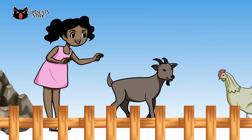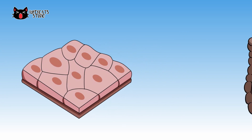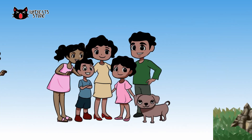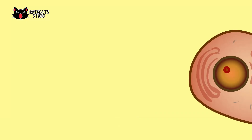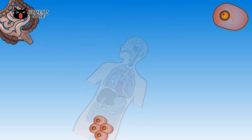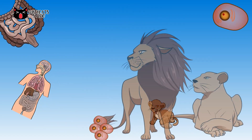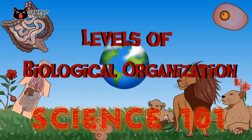Studying living organisms is a broad topic. To make it easier to study, scientists divided it into different levels of organization. It starts from the smallest unit of life to the largest and broadest category. Let's learn the levels of biological organization here on Science 101.